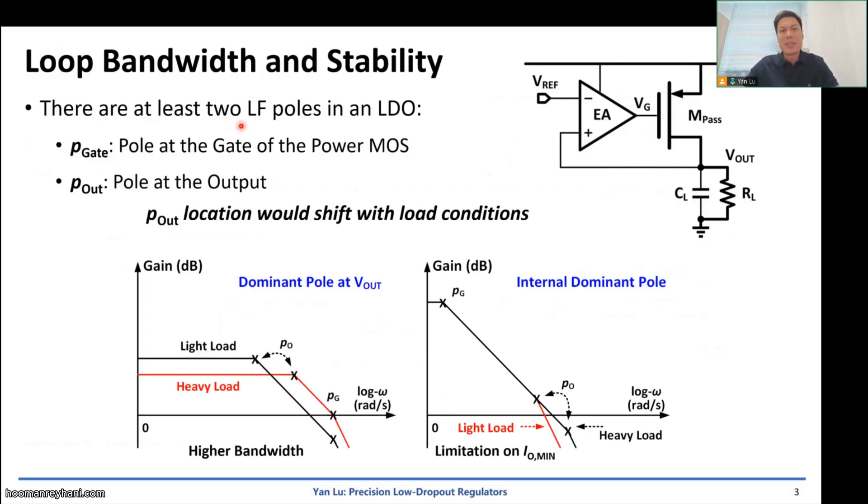Basically there are at least two low frequency poles in an LDO, one generated from the large power transistor on the gate because it has a large capacitance. Another one on the output node, because it has a large load capacitance. And at light load condition, it has a large resistance as well. So basically the output pole will shift with the loading conditions. And this is the main difference between LDO and amplifiers, right? Amplifiers drive a fixed load, but for LDOs, the output current will change.